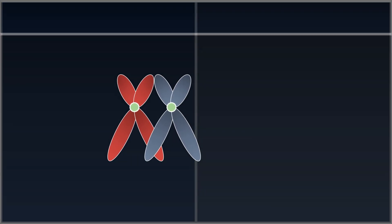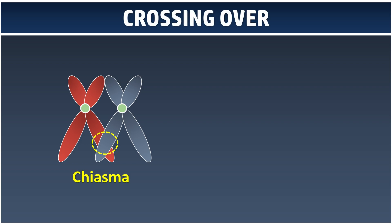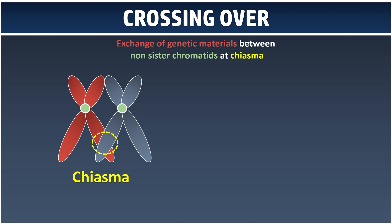Now let us see what happens when they cross over with each other. Can you see that they are overlapping at these locations? These locations have a specific name called chiasma. Chiasma is where both of the homologous chromosomes have their crossing over process. Crossing over is basically a process where there is an exchange of genetic materials between two non-sister chromatids at the chiasma.